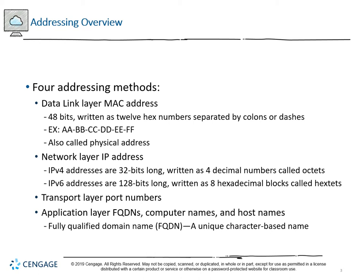At layers 5–7 we have FQDNs — fully qualified domain names. When you think about a website like CNN, Craigslist, or cfcc.edu, these are addresses that contain semantics — meaning rather than just syntax or characters. A fully qualified domain name traditionally conveys meaning.